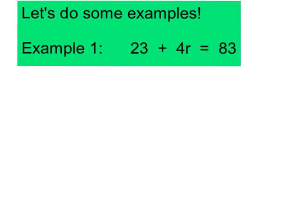According to our steps, our first step is to use an inverse operation to eliminate any term that's being added to or subtracted from the variable term. Right here, 4R is our variable term — we know that because it has a variable attached to it. 23 is being added to our variable term, so we're going to need to eliminate that. I like to put two straight lines around the equal sign — I call them the railroad tracks — because it helps me visually remember that whatever inverse operation I do on one side, I do the exact same thing on the other side. So my inverse operation is going to be to subtract 23, because that's the opposite of what's happening in the original equation.